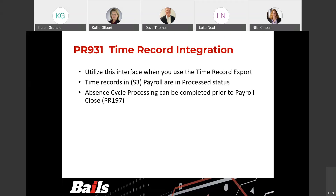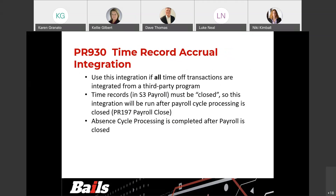You can complete your absence management processing prior to your payroll close. You run the PR931, throw those up there, and the time records that came in from the timekeeping system — the time off — need to decrement the buckets in GHR absence management. Now, if you don't want to run prior to payroll, once your payroll cycle is closed, you run a program called the PR930 — another time record accrual integration. This one is run only after payroll cycle processing is closed.